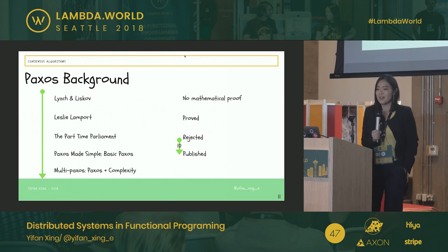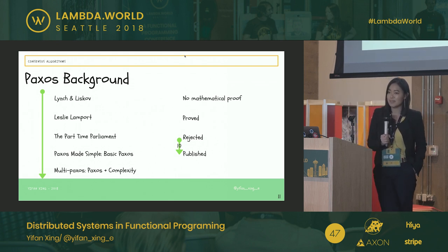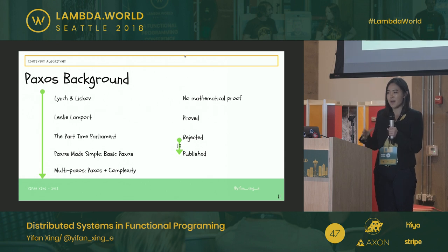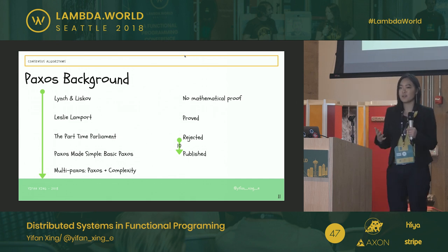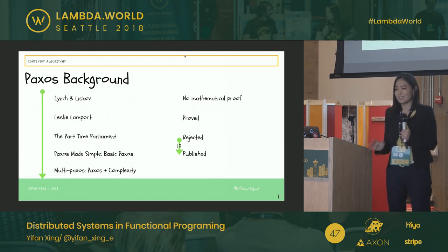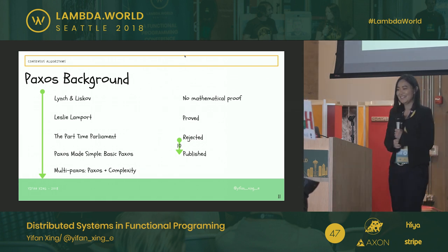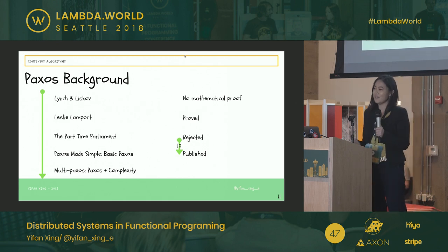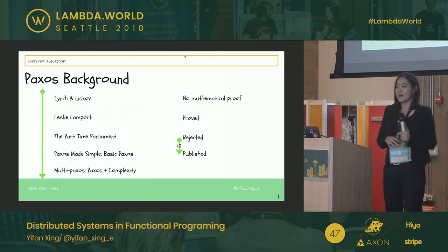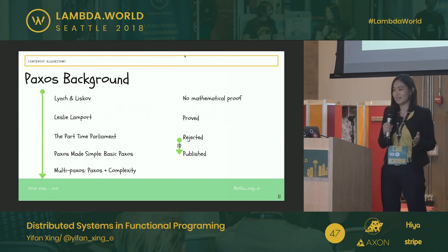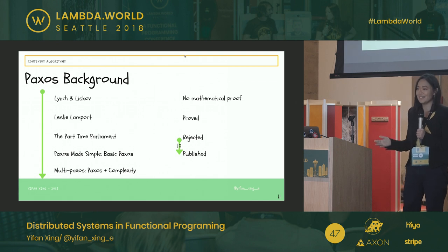Let's first start with Paxos. Compared to other algorithms, Paxos has a very colorful background. It was first implemented and developed by Lynch and Liskov. But when they developed this algorithm, they couldn't really find a mathematical proof that proved why the algorithm works. So Leslie Lamport found this paper and had a very malicious thought — he said he was going to prove it wrong. He worked really hard, but he accidentally proved it right. After 10 years of trying to publish, his paper was finally accepted.